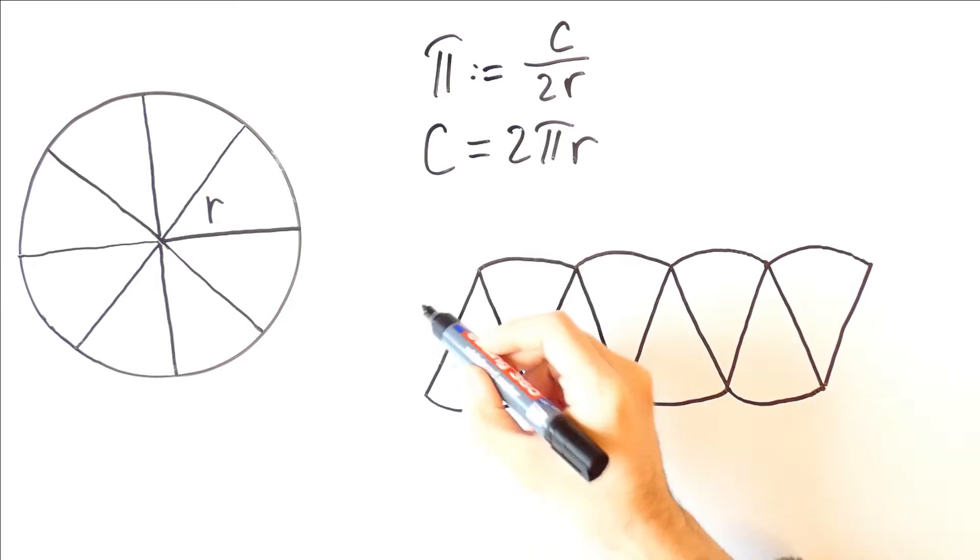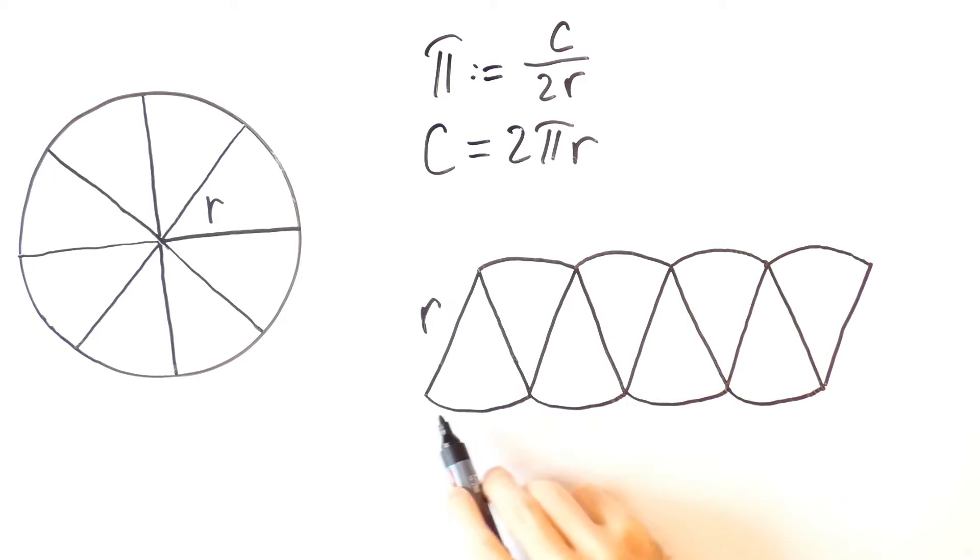This segment is the radius of the circle. And this curved line consists of half of all circle arcs, the other half is over here. So, the length of this curved line is equal to circumference over 2.